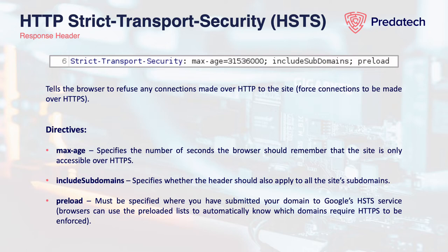Lastly, we have the preload directive, which is specified where you have submitted your domain to be put on Google's HSTS preload service. When a user initially visits an application, they will be provided with the HSTS response header if enabled by the server. However, because the first request is still initiated over HTTP, which the server then upgrades manually to HTTPS, there's no protection for that initial request.